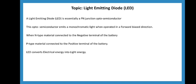In forward bias condition, the PN junction diode has a P-type extrinsic semiconductor and N-type extrinsic semiconductor. Forward bias condition means P-type is connected to positive and N-type to negative. LED converts electric energy into light energy. In forward bias condition, if you connect an LED diode, the electric energy is converted into light energy.